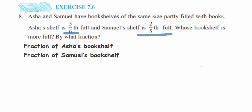So we're going to write down what we know from the question. The fraction of Asha's bookshelf is five upon six, and Samuel's bookshelf is filled by two upon five. Now they're asking whose bookshelf is filled more, so we have to do a comparison — which fraction is greater: five upon six or two upon five?